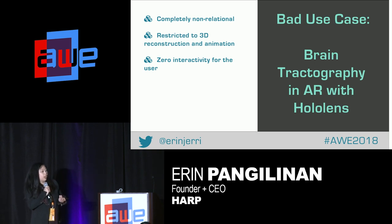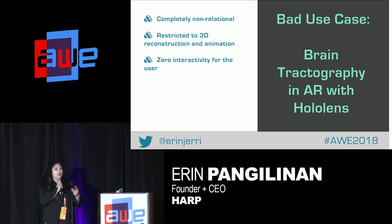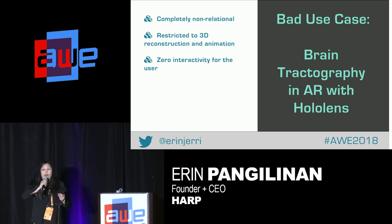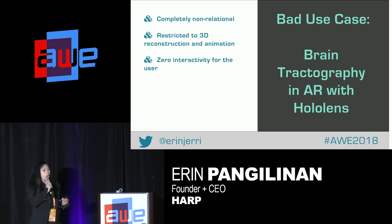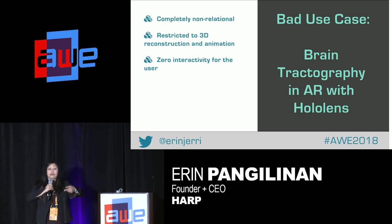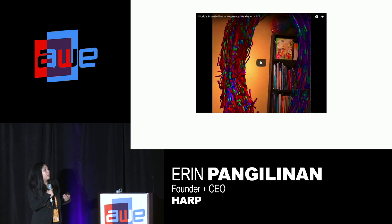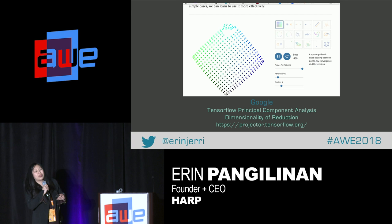Bad use cases I've seen — in health tech and biotech, a lot of people have used things in HoloLens where it's completely non-relational. They'll say it's brain tractography to understand the brain, but there is no interactivity with the user on haptics. It's restricted to taking essentially three-dimensional data that is flat, reconstructing it in a 3D environment, saying it's animation and calling it data visualization. I would argue that it's not. This right here is a little bit better — a tractography image from a different company that's color-coded, but that doesn't mean it's data visualization.